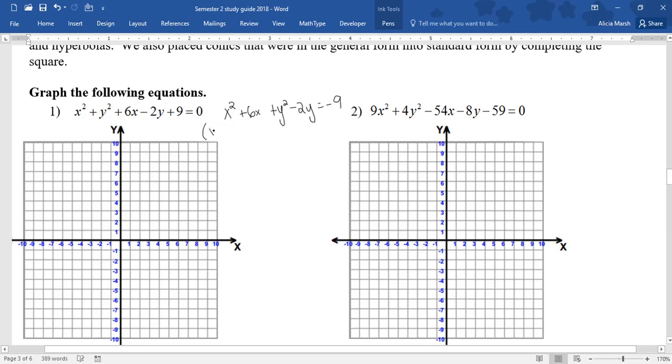Then what I need to do is figure out my blank. So remember, to find the blank, you're going to take the middle number, divide it by 2, and then square. So 6 divided by 2 is 3, 3 squared is 9. I'm going to do the same thing for my y's. Negative 2 divided by 2 is negative 1. Square that, 1.